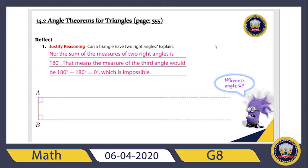Can a triangle have two right angles? Let's see. Suppose I draw a triangle and make two of its angles 90 degrees — right angles A and B. If I have two angles that are 90 degrees, these two lines are parallel, so they don't meet at point C. There is no point C, so it is impossible to have a triangle with two right angles. If this is 90 and this is 90, then 90 plus 90 already equals 180, making the third angle zero — which is impossible.